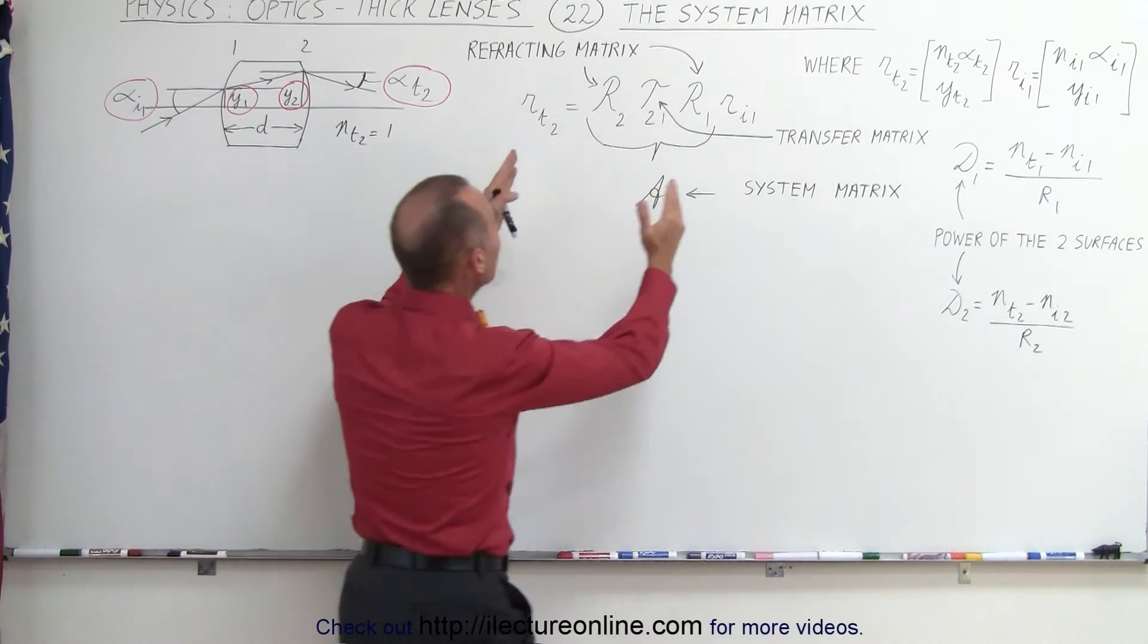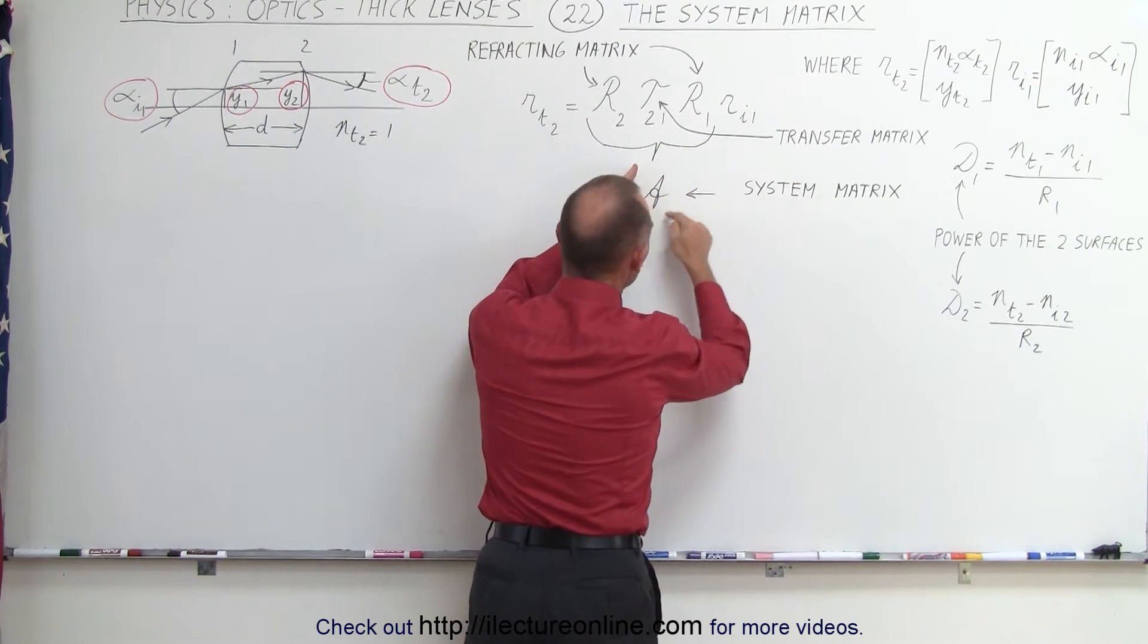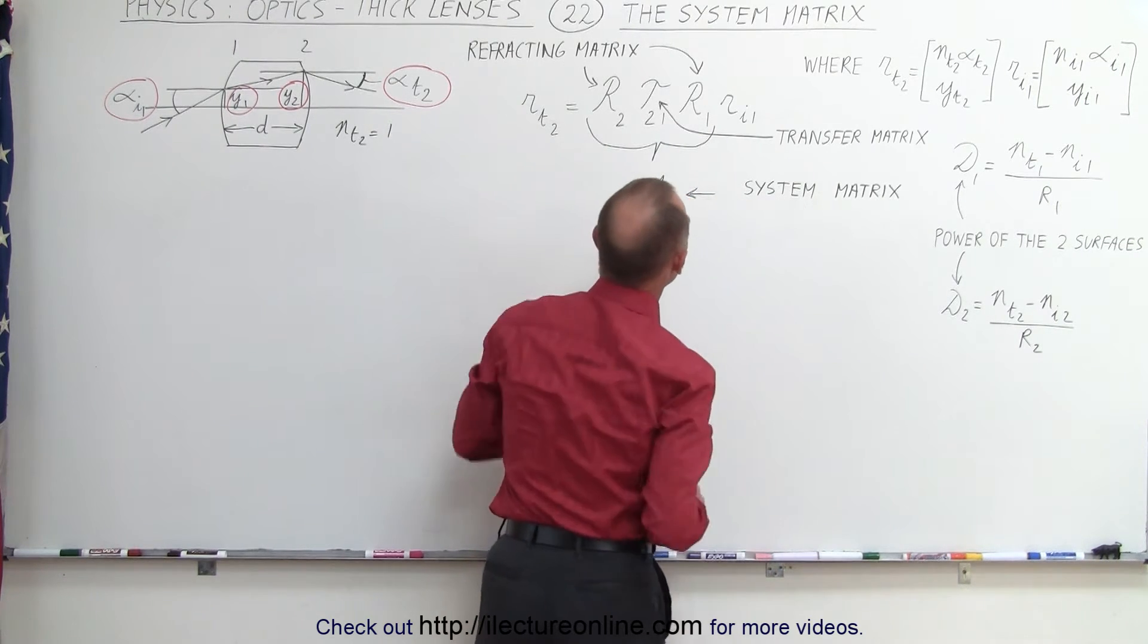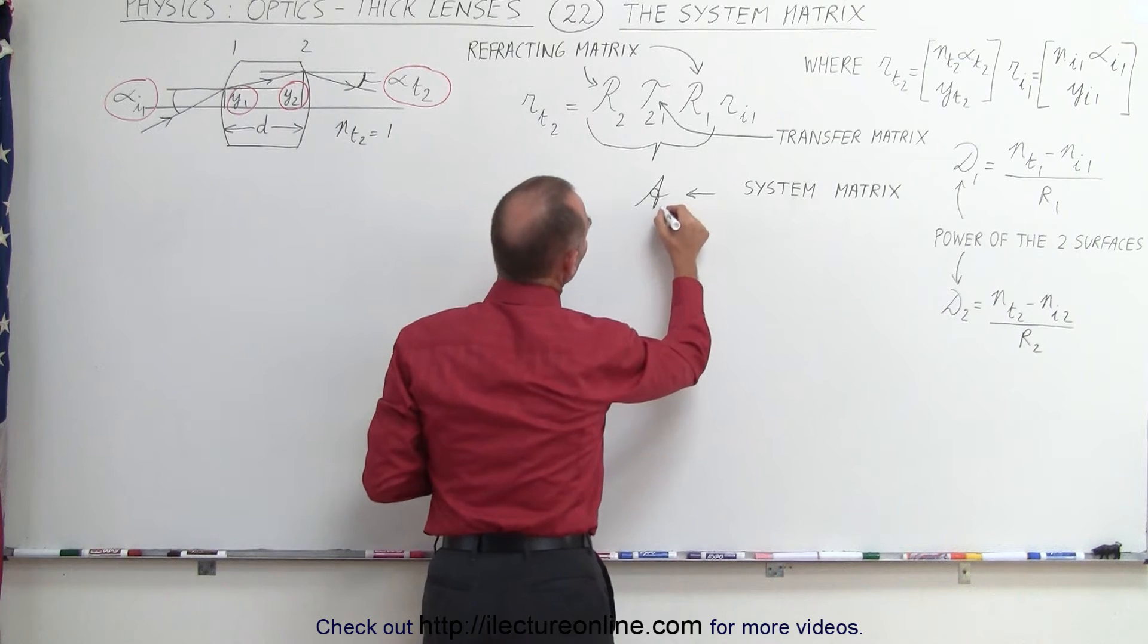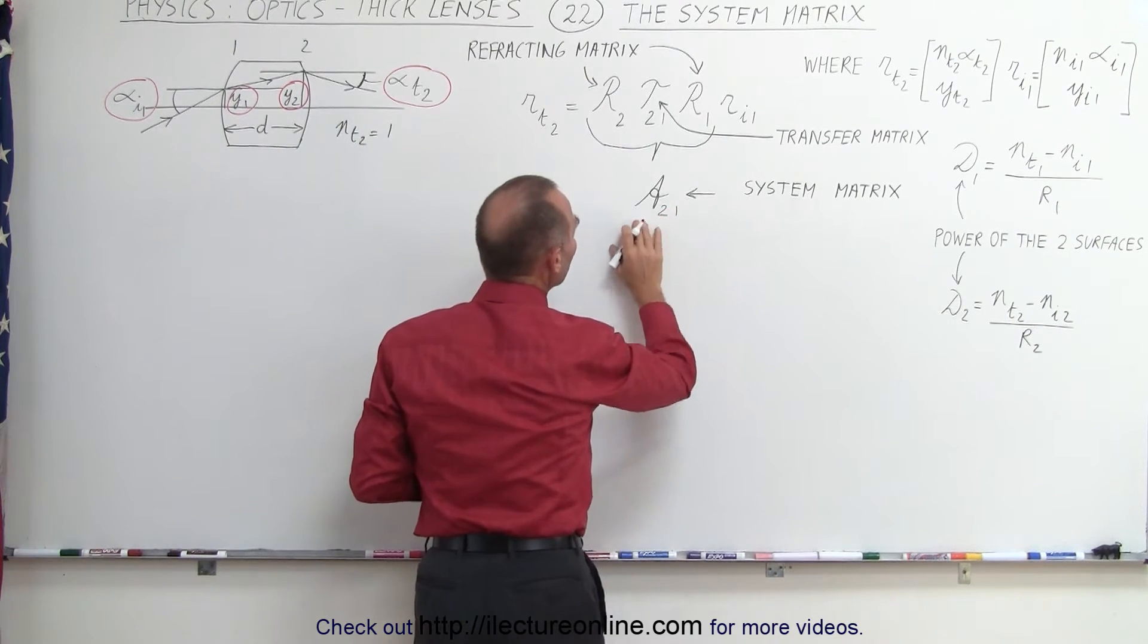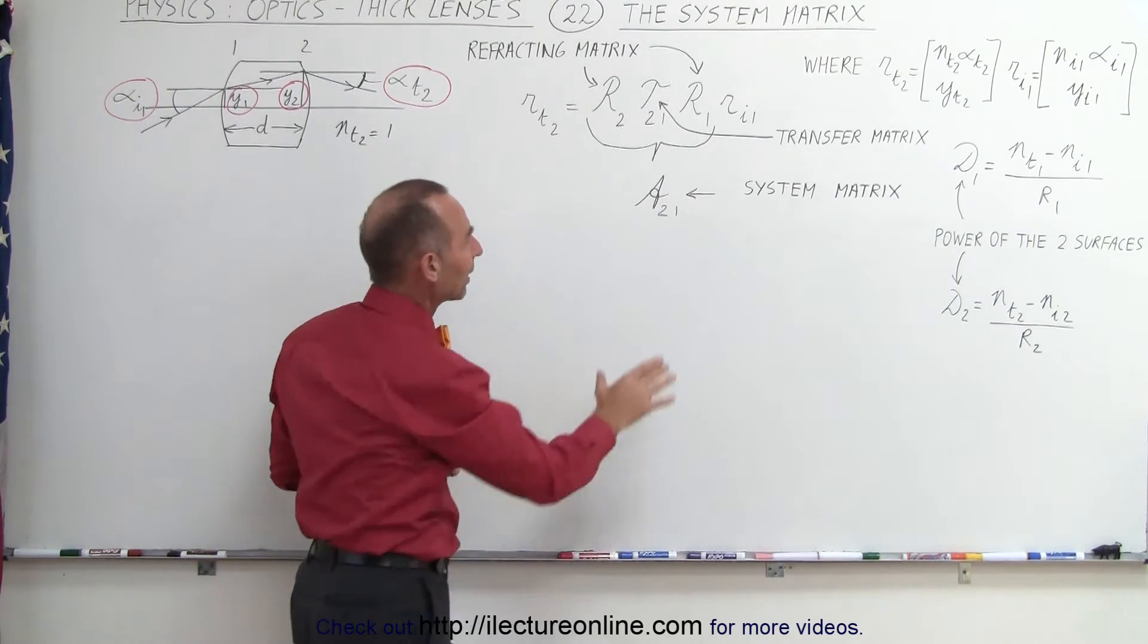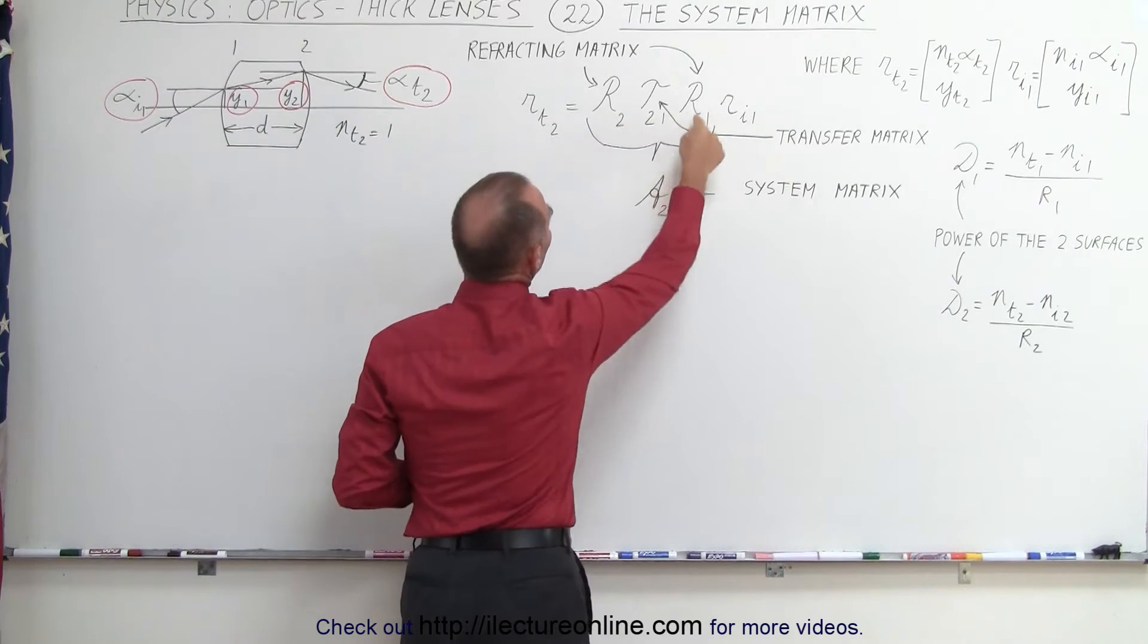When we combine these three matrices together as a single matrix, this is then called the system matrix. Sometimes they do use the subscripts like 2 and 1 to indicate that it's from boundary 2 to boundary 1 as we multiply those matrices together. So, when we write it like this, this includes the three matrices combined.